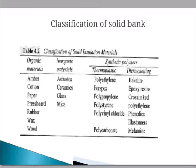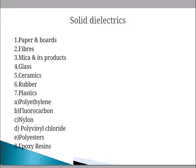Subgroups within Class C are rated at 200°C, 220°C, 250°C, and above. The solid dielectrics used in practice include paper and boards, fibers, mica and its products, glass, ceramic, rubber, plastic, polyethylene, fluorocarbon, nylon, polyvinyl chloride, polyester, and epoxy resin. We will now discuss each material in detail, starting with paper and board.